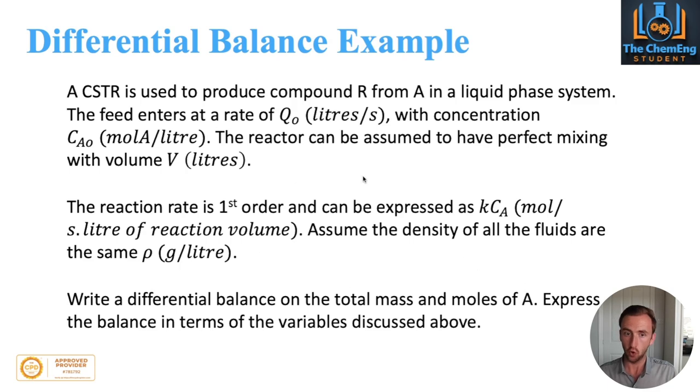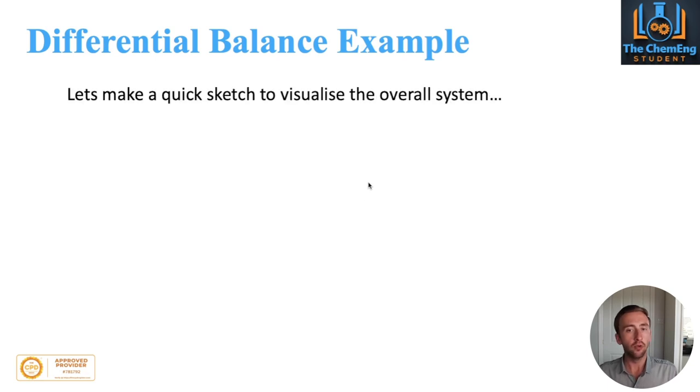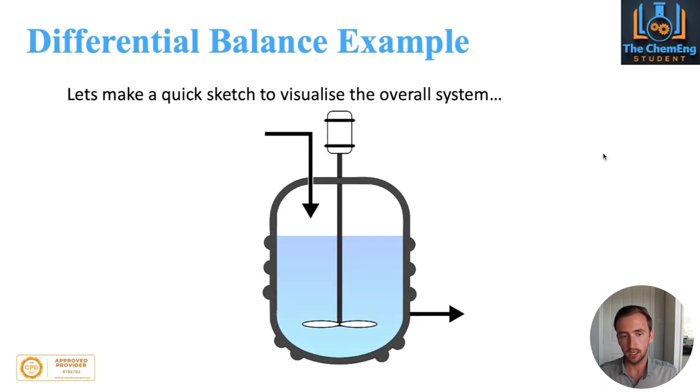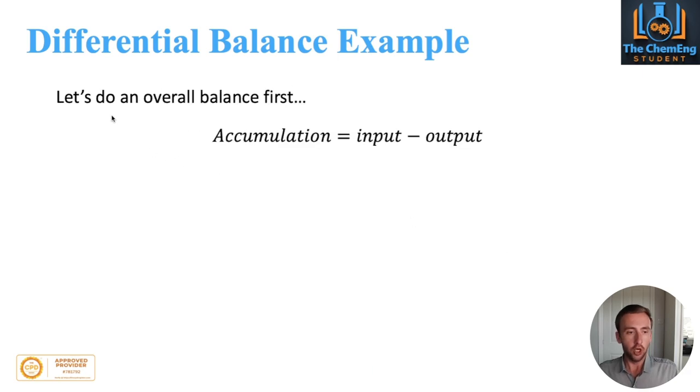What we want to do is write the differential balance on the total mass and moles of A, and express the balance in terms of the variables discussed above. So we've got two types of balances we need to do. Before we jump in, it's always a good idea to visualize the system with a schematic. We'll take our batch reactor here and put in our entry points: Q₀, C_A₀ and ρ. We have our reactor volume V, and then Q, C_A and ρ. The knots imply the inputs and without the knots they imply the outputs.